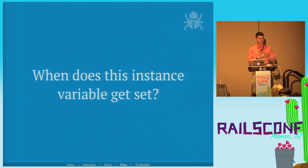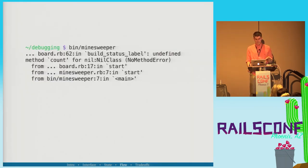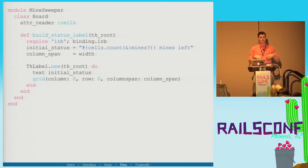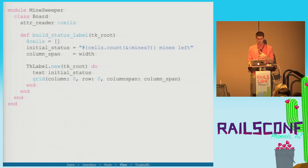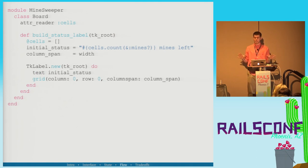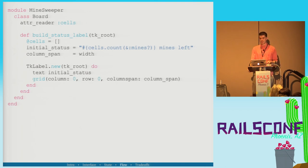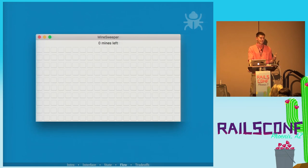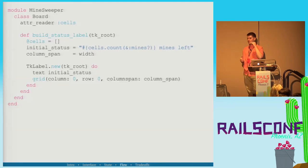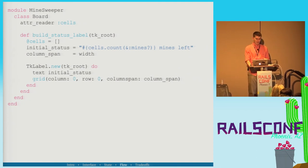The last and trickiest example: when does this instance variable get set? We get 'undefined method count for NilClass' — cells should be set but it's not. We need to find the line in code where this instance variable would have been set, to change build_status_label to be after that. We bust out TracePoint again. This time we give the TracePoint object at every new line the interpreter hits. We enable it, and for a specific condition we print the path and line number minus one — because if cells changed, the previous line must have changed it.